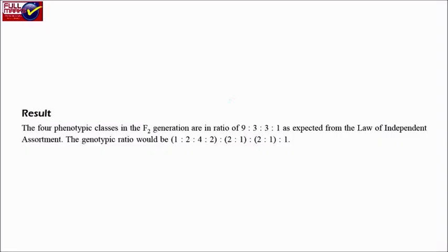Result: The four phenotypic classes in the F2 generation are in ratio of 9:3:3:1 as expected from the law of independent assortment. The genotypic ratio would be 1:2:4:2:2:1:2:1:1.